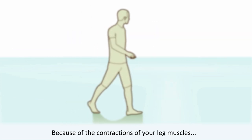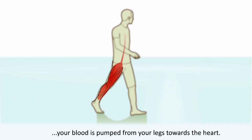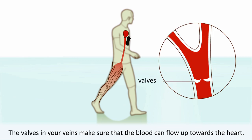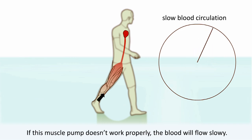Because of the contractions of your leg muscles, your blood is pumped from your legs towards the heart. The valves in your veins make sure that the blood can flow up towards the heart.